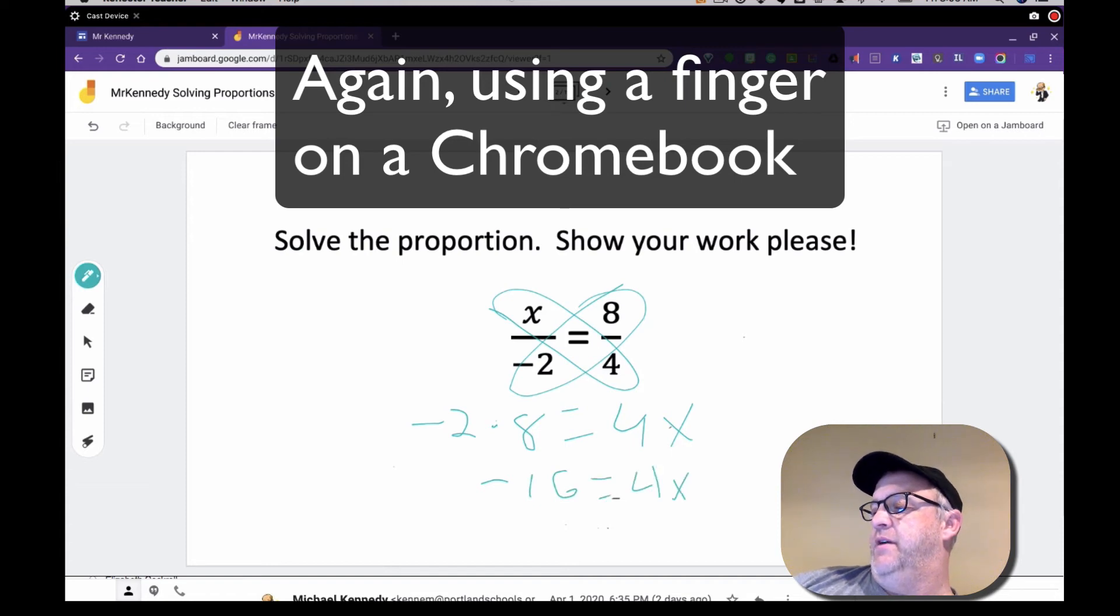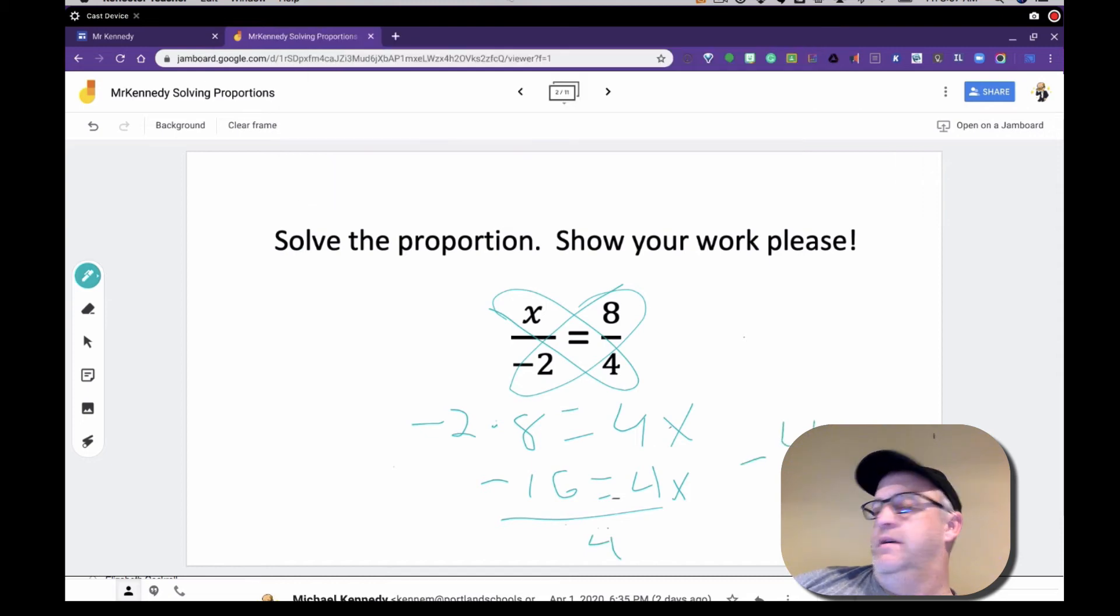Divide by 4, negative 4 equals x. So there you go. That's done.